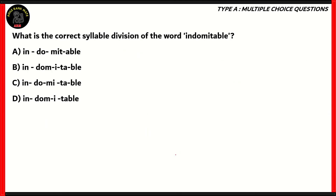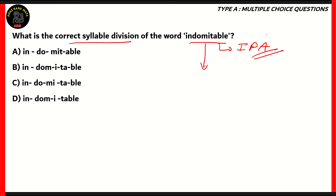Now let's look at another type of question: What is the correct syllable division of the word 'indomitable'? The spelling is I-N-D-O-M-I-T-A-B-L-E, and we need to find the correct syllable division. For these types of questions, it's a good idea to learn the International Phonetic Alphabet, or IPA. You can find guides to this in many videos and online source materials. We will use the IPA in order to find out the correct syllable division.